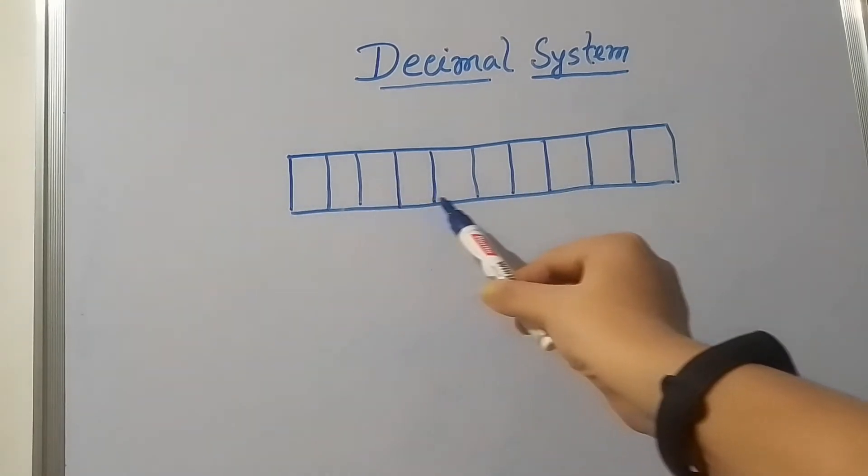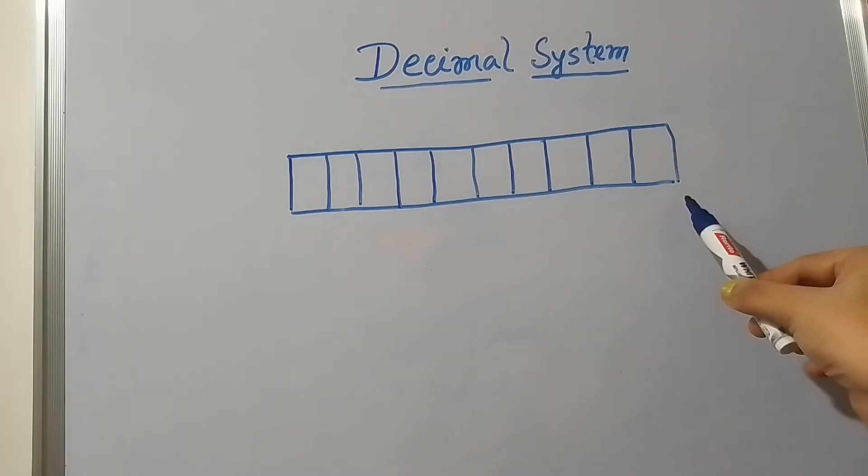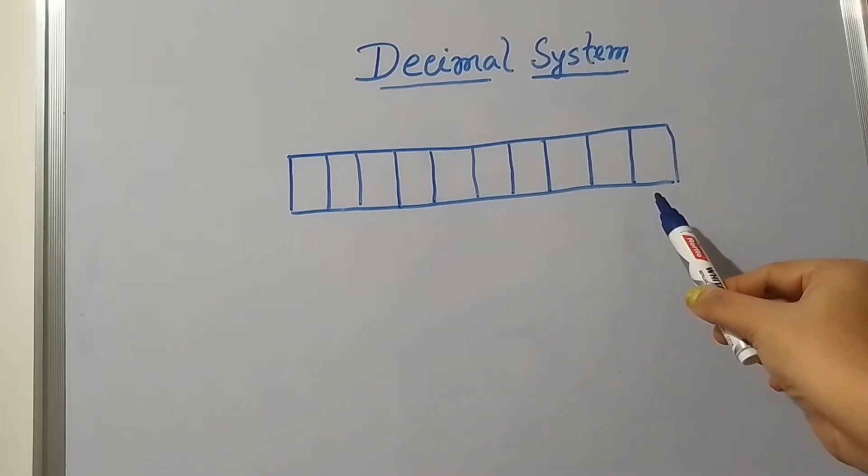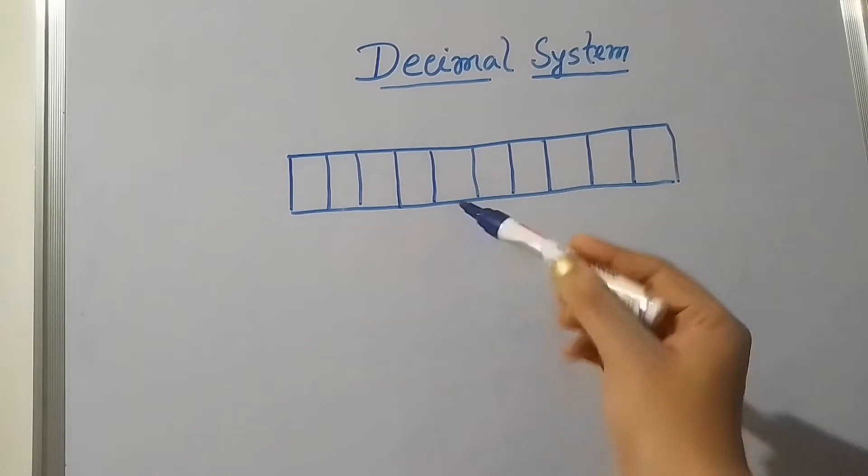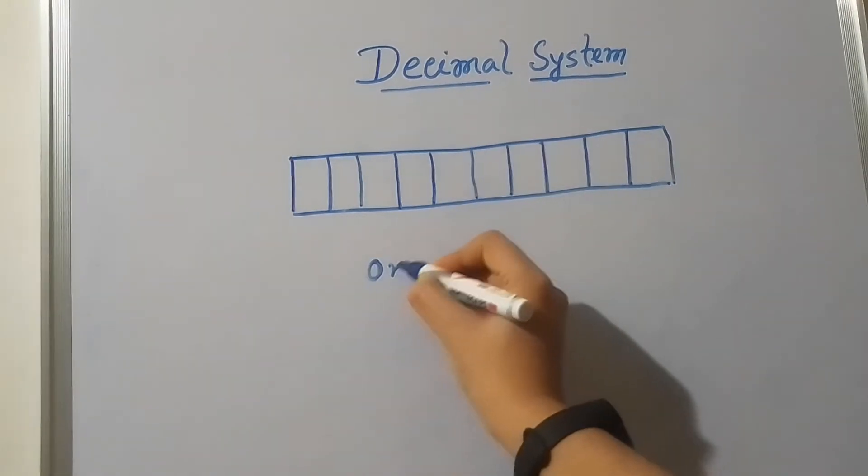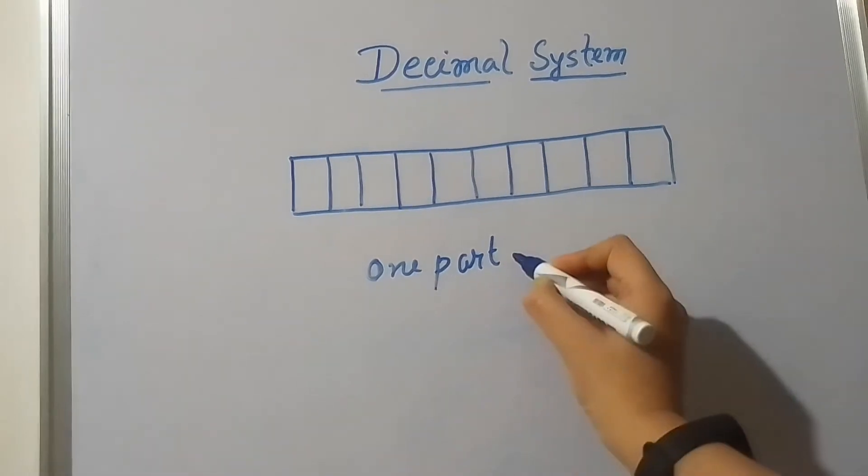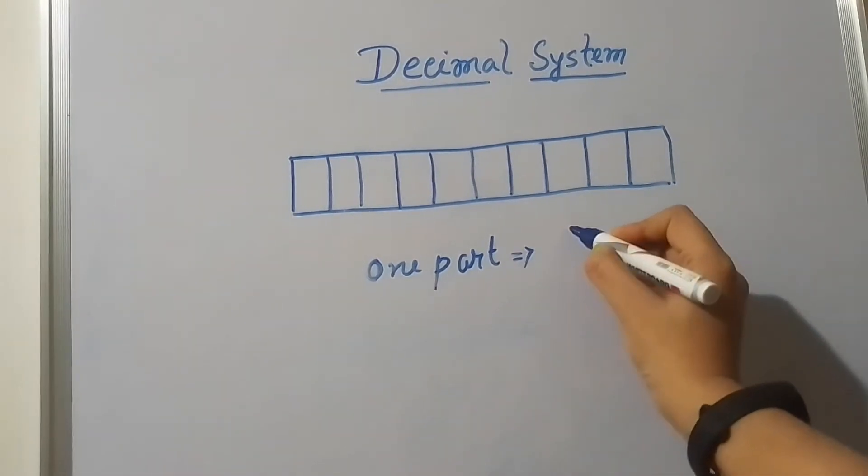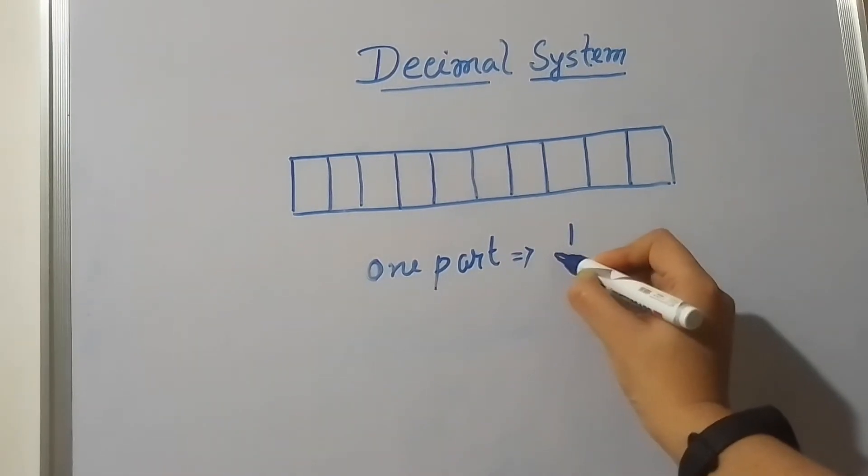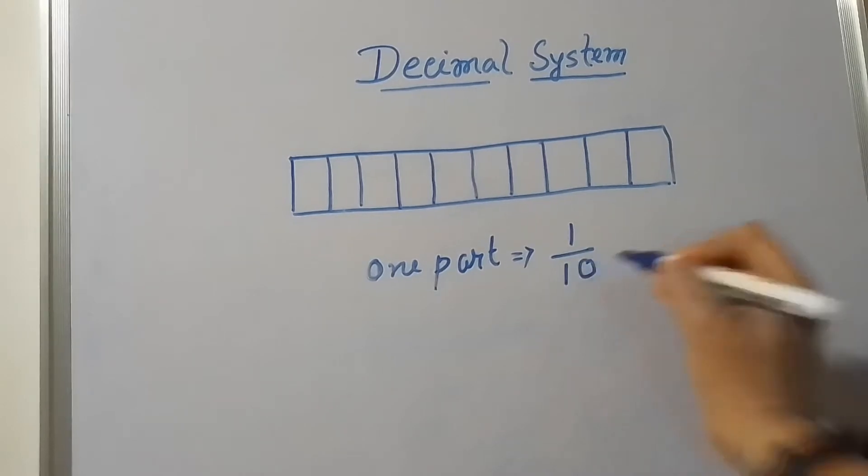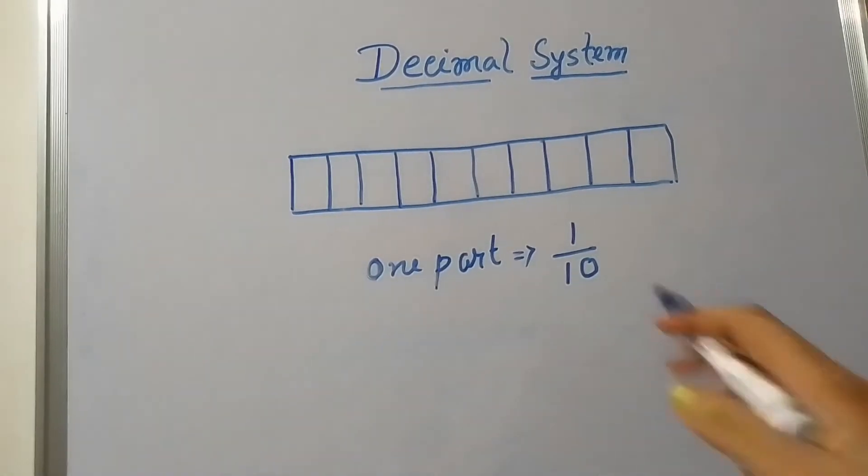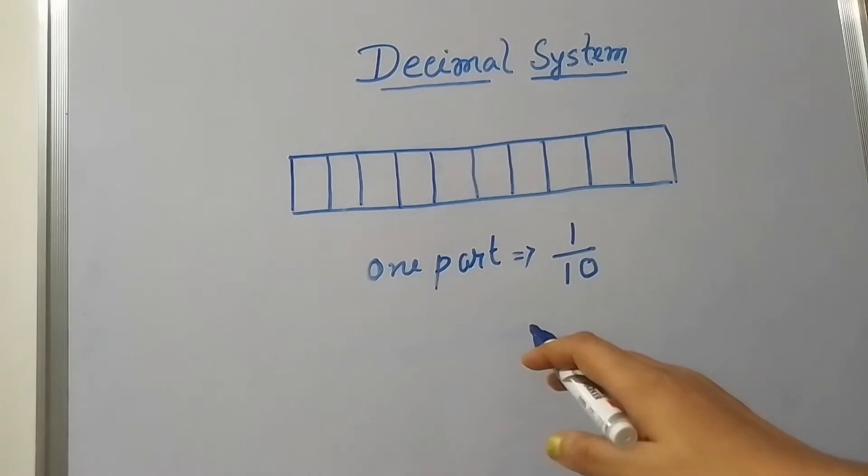Suppose here I am taking a strip and I divided the strip into 10 equal parts. Now if I want to take one part out of these 10 parts, then how to write it in fraction? I have to write 1 by 10, which means we can call it 1 tenth.